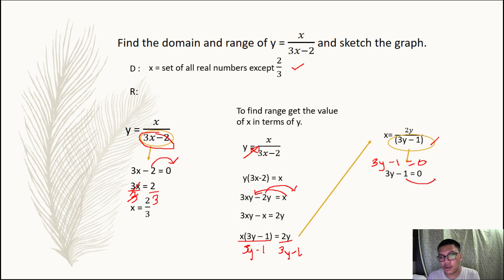Then we obtain 3y is equal to 1. Now dividing both sides by 3, we obtain y is equal to 1 over 3. Therefore our range is set of all real numbers except one third.